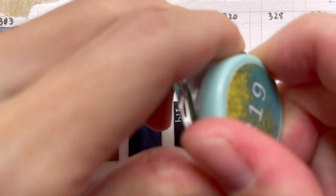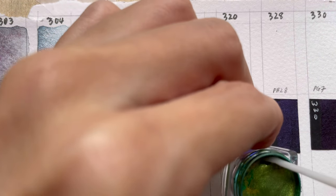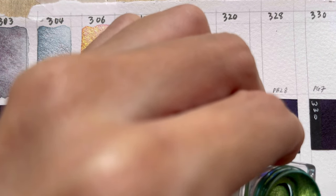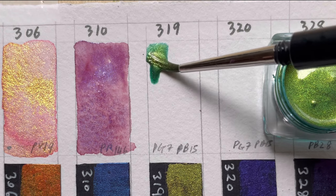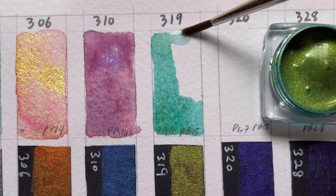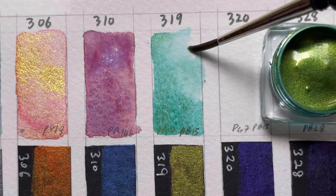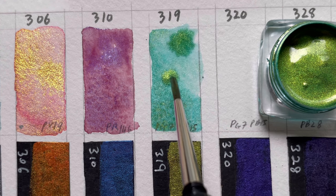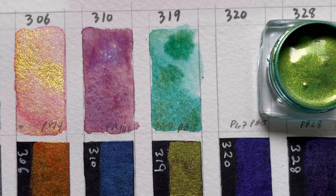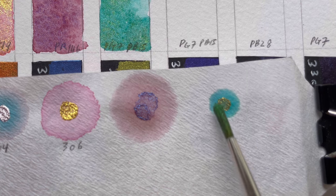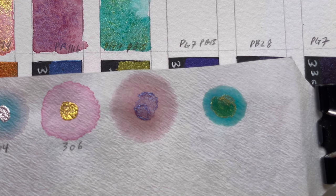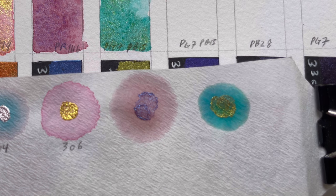The next color is 319. 319 is made up of Mika, PG7, and PB15. We have seen this mixture before. When we paint it, I think it does look a little bit more greenish. There's actually more PG7 in this and those gold flakes just sitting on top looking really nice. The mixture separates out into a gold center surrounded by a greenish ring.